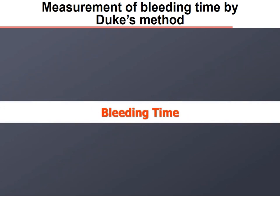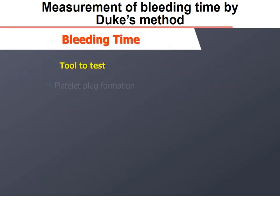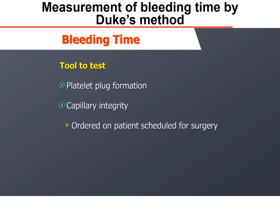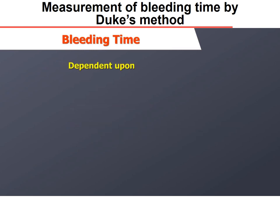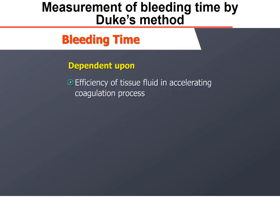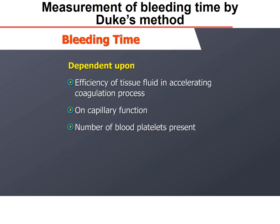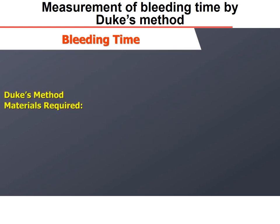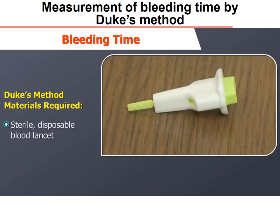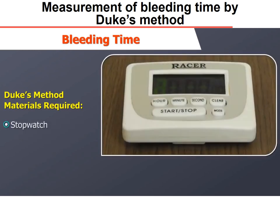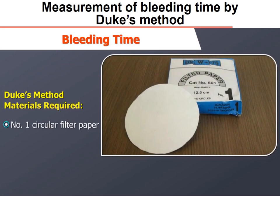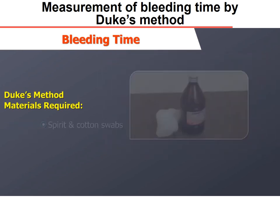The bleeding time test is a useful tool to test for platelet plug formation and capillary integrity, and is ordered for patients scheduled for surgery. It depends on the efficiency of tissue fluid in accelerating coagulation, capillary function, and the number and ability of blood platelets to form a plug. For Duke's method, materials required include a sterile disposable blood lancet capable of a 5 mm wide and 1 mm deep puncture, a stopwatch, Whatman No. 1 circular filter paper, spirit and cotton swabs, and gloves.